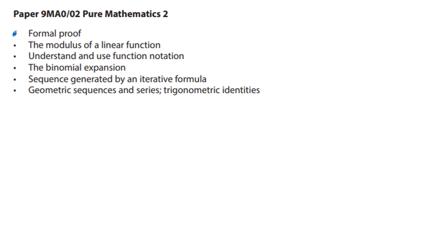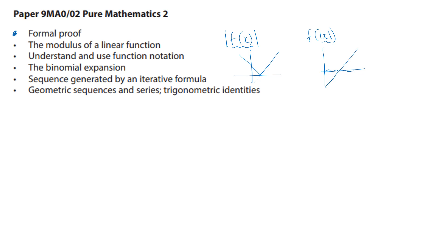The modulus function - do you definitely understand that when we take the mod after we've applied the function, this is the type of graph where we can't let the y-value go negative? These are the graphs where when it goes underneath it is reflected and sits on the x-axis, as opposed to when you take the mod before you apply the function, where negative values of x go into the function but are read as positive, so you just get a reflection in the y-axis. Definitely know the difference between the two.